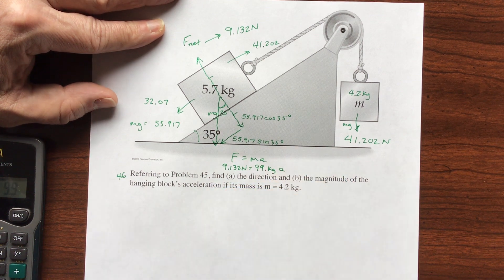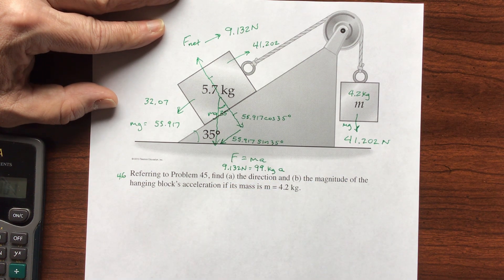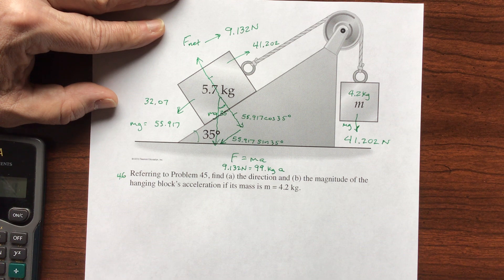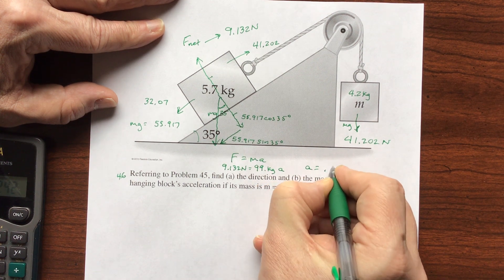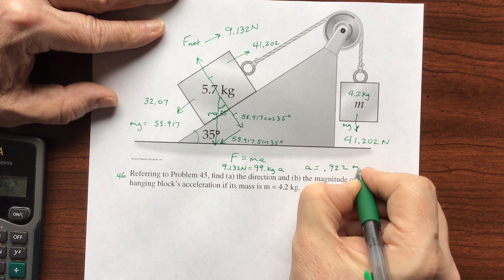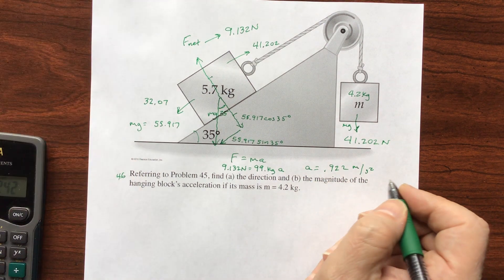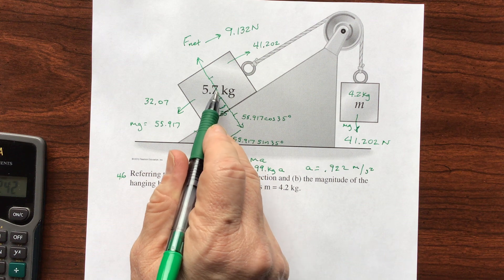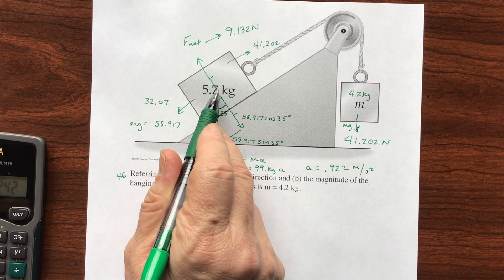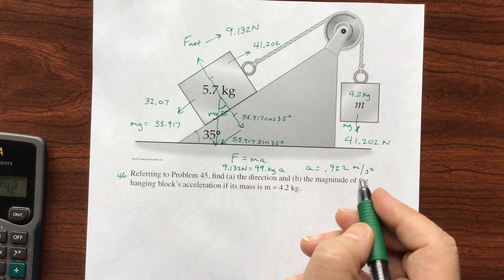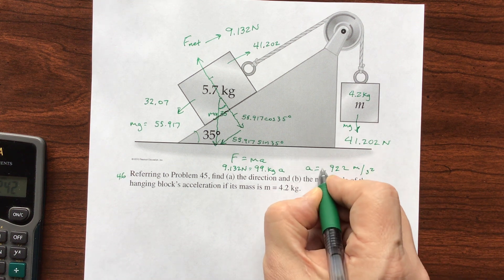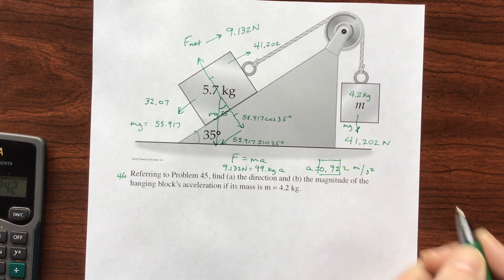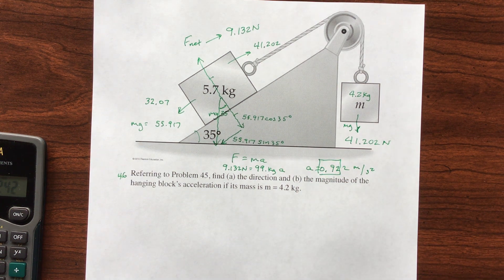And then A is going to be in meters per second squared. So divide that into it, and I get acceleration is 0.922 meters per second squared. This is 2 significant digits, this is 2 significant digits, so it looks like this is going to be just 0.92 meters per second squared. Thank you.